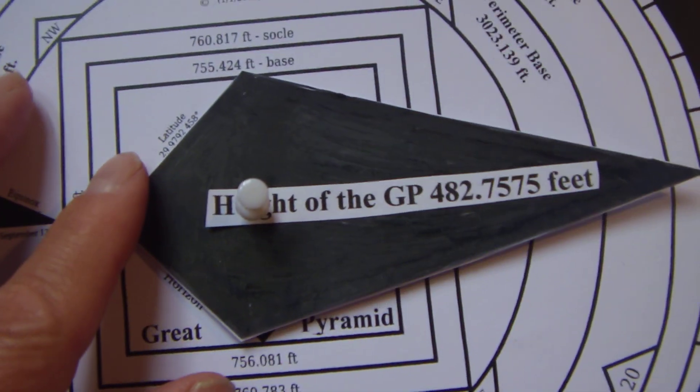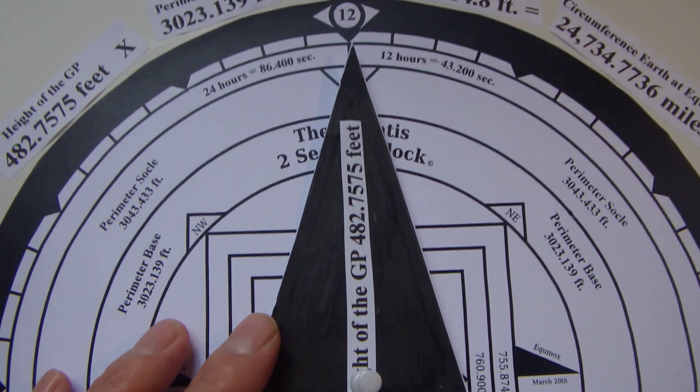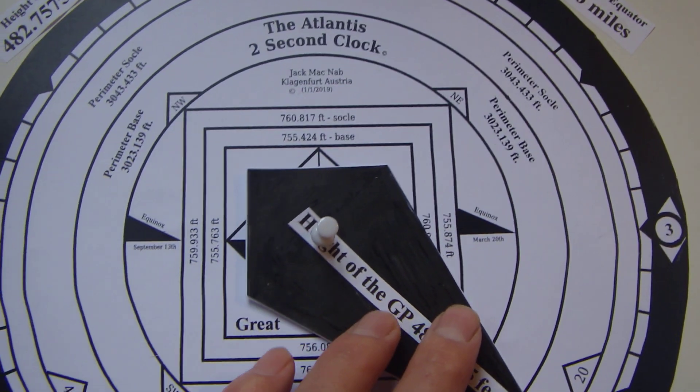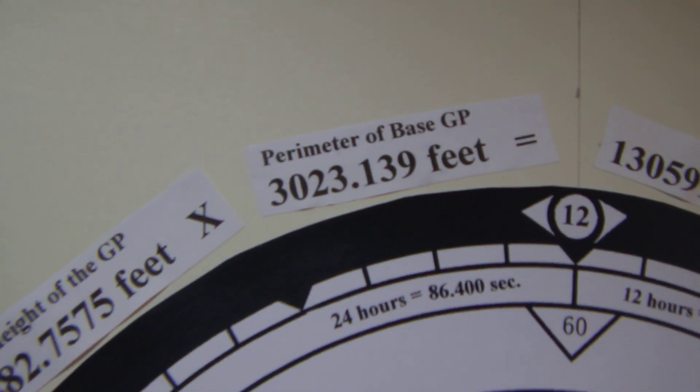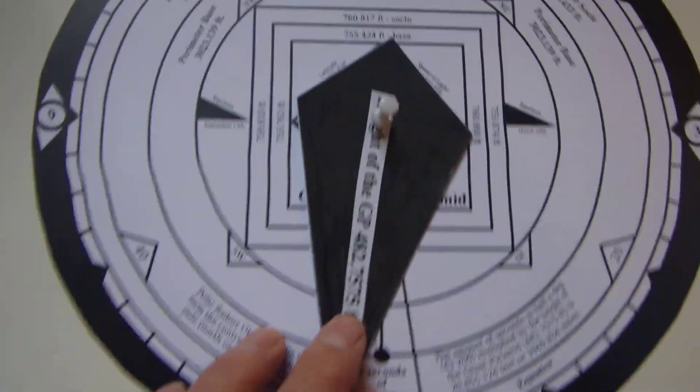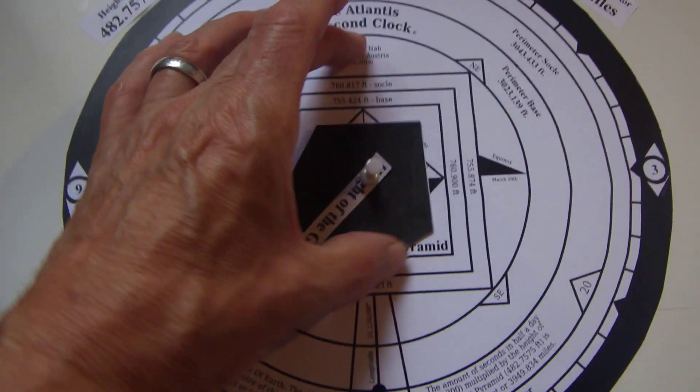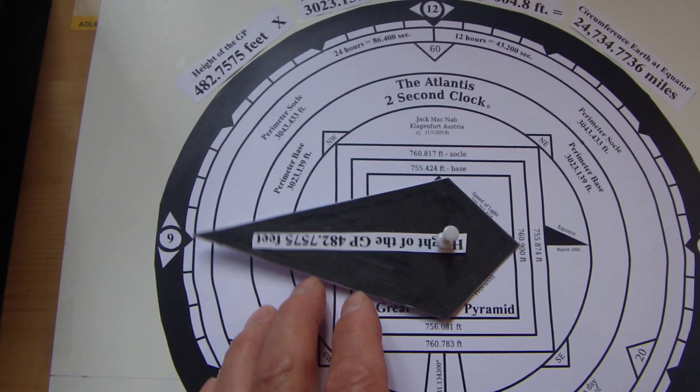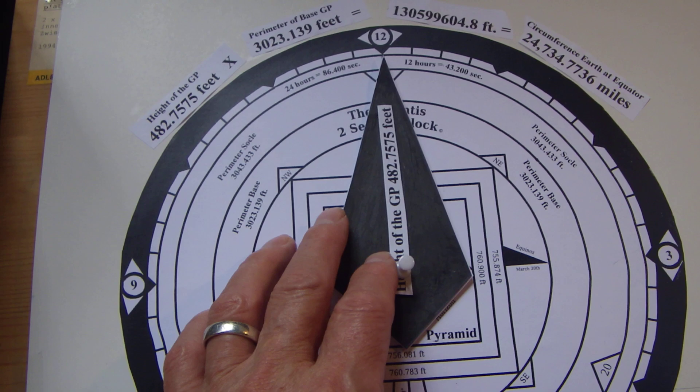Here's how it works: this represents the height of the Great Pyramid of Giza. So we take that height, that number, and multiply it by the perimeter, which is that number here. We go all the way around the Great Pyramid of Giza, which this in the middle is representing - the pyramid looking down on it. We go all the way around, multiply those two numbers, the height by the perimeter.